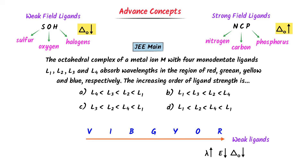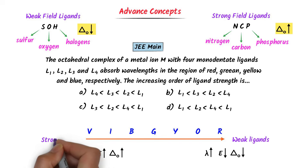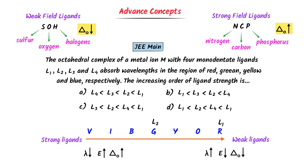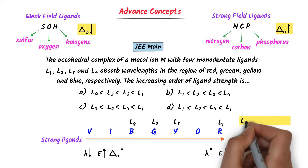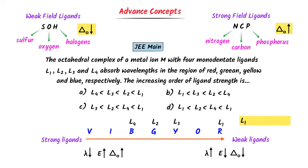At the left side of the spectrum, violet has smaller wavelength, greater energy, and causes more splitting of d-orbitals — this corresponds to strong field ligands. Now mapping: L1 absorbs red, L2 absorbs green, L3 absorbs yellow, L4 absorbs blue. L1 is the weakest ligand because it absorbs red light; L3 is next (absorbs yellow); L2 is stronger (absorbs green); and L4 is the strongest ligand because it absorbs blue color. Thus the correct option is B.